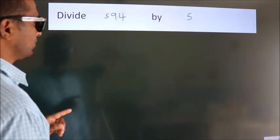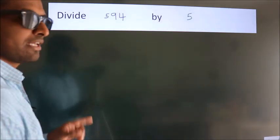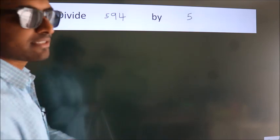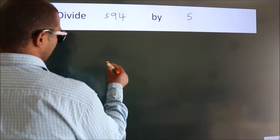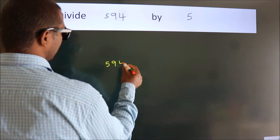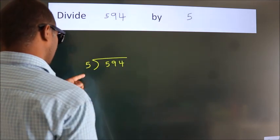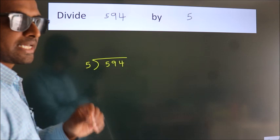Divide 594 by 5. To do this division, we should frame it in this way: 594 here, 5 here. This is your step one.